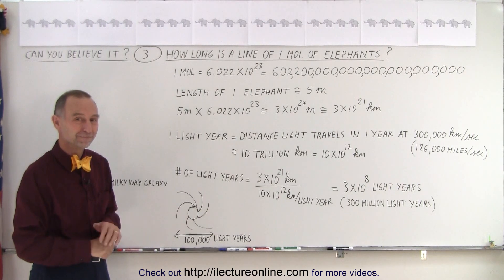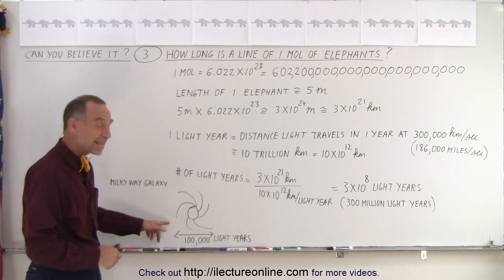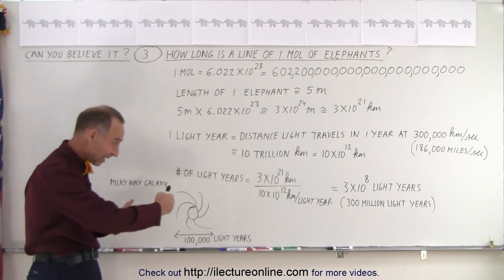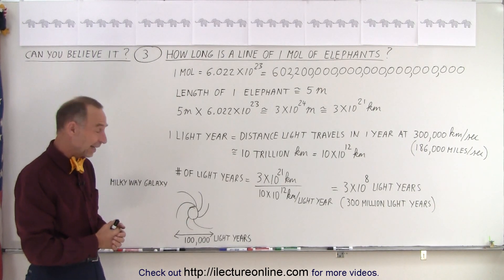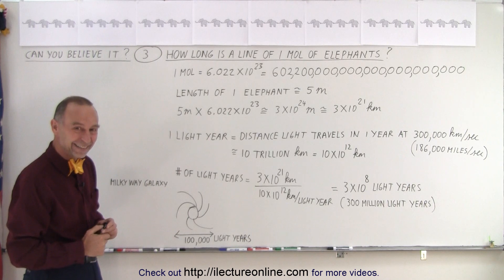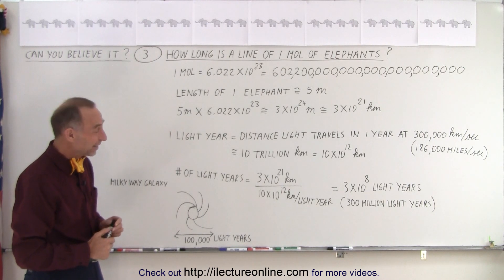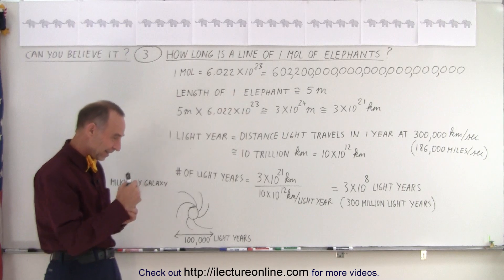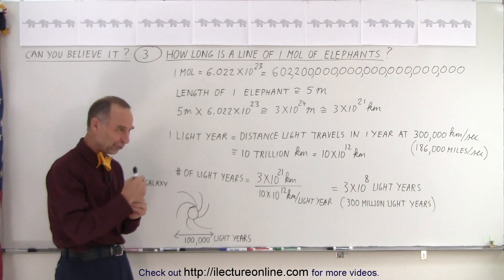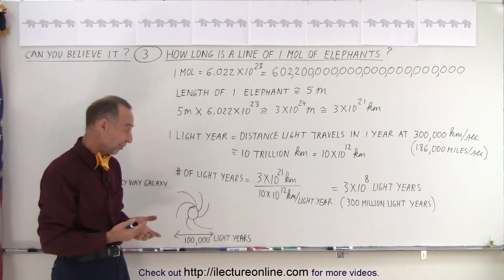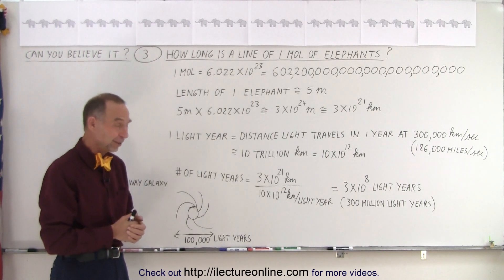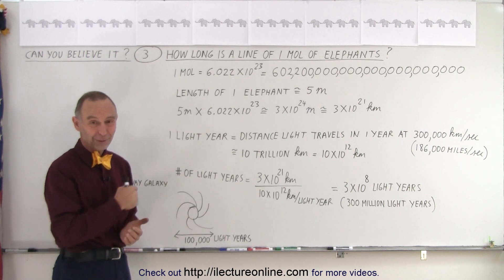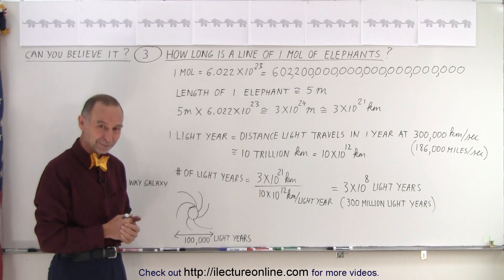So how many galaxies would it be? Well, it would be 3000 galaxies lined up for the same distance. And galaxies are big. Is there a universe? Well, not quite. The radius, so to speak, the farthest point of the visible universe is about 13, 14 billion light years. So we're not quite there yet. We need quite a few moles of elephants lined up.